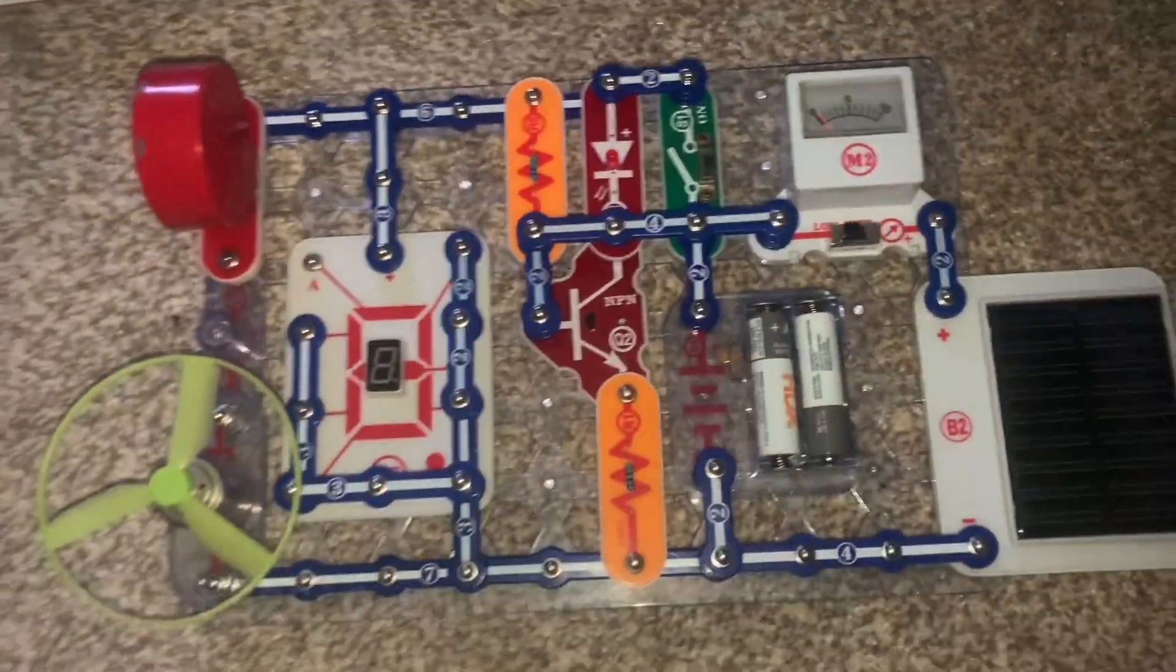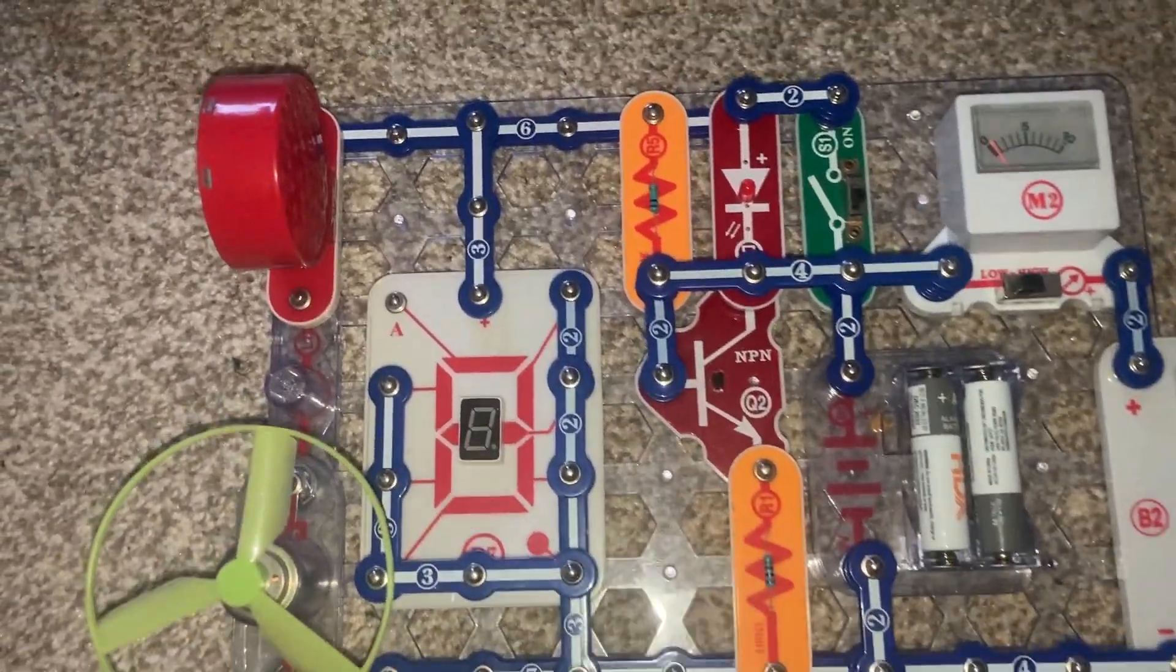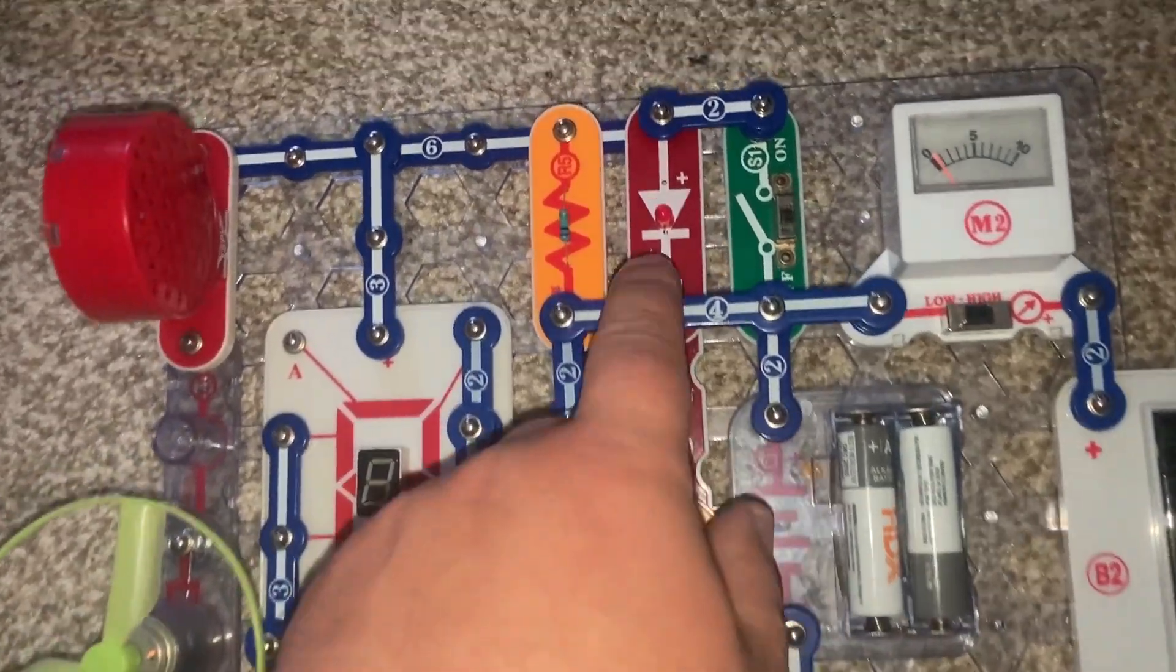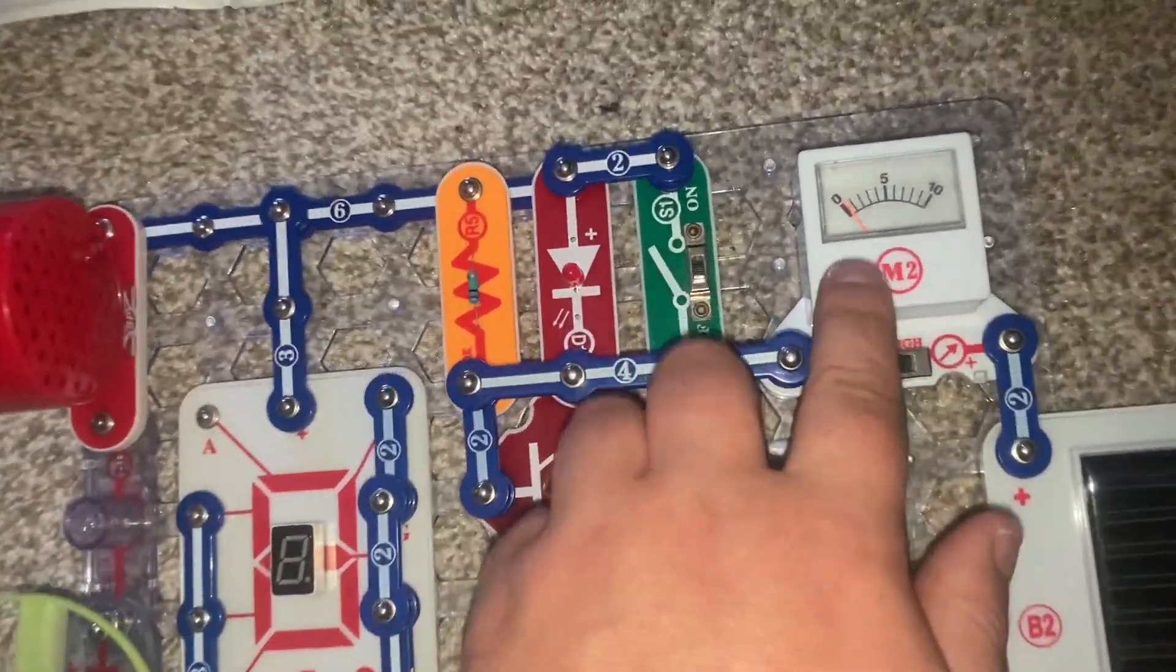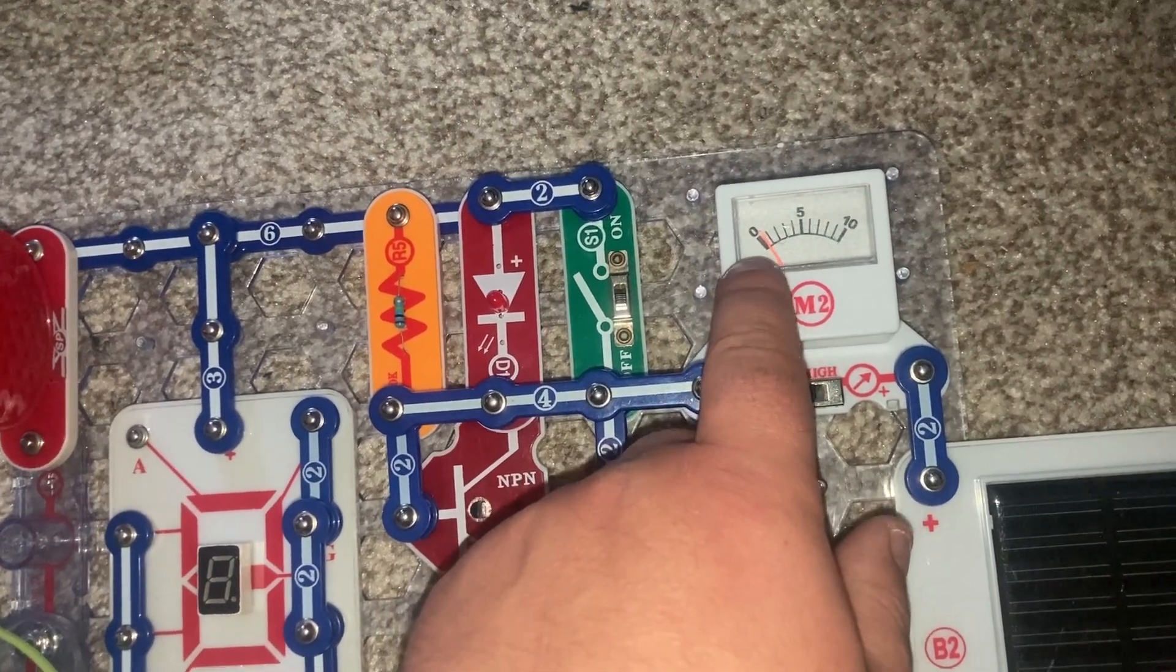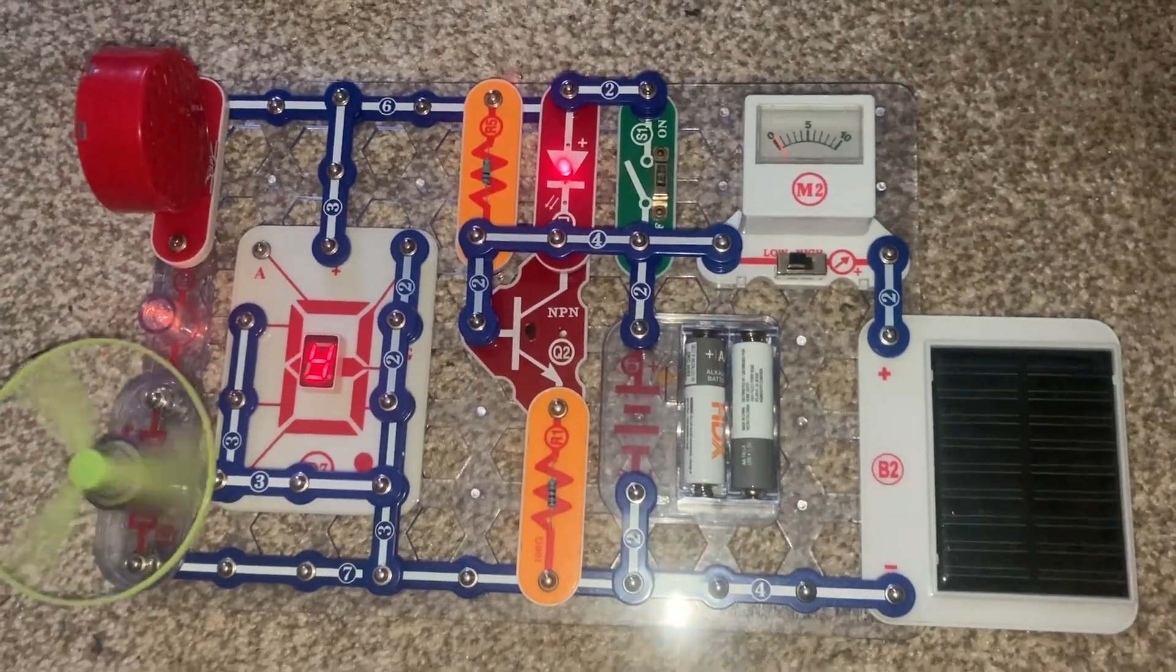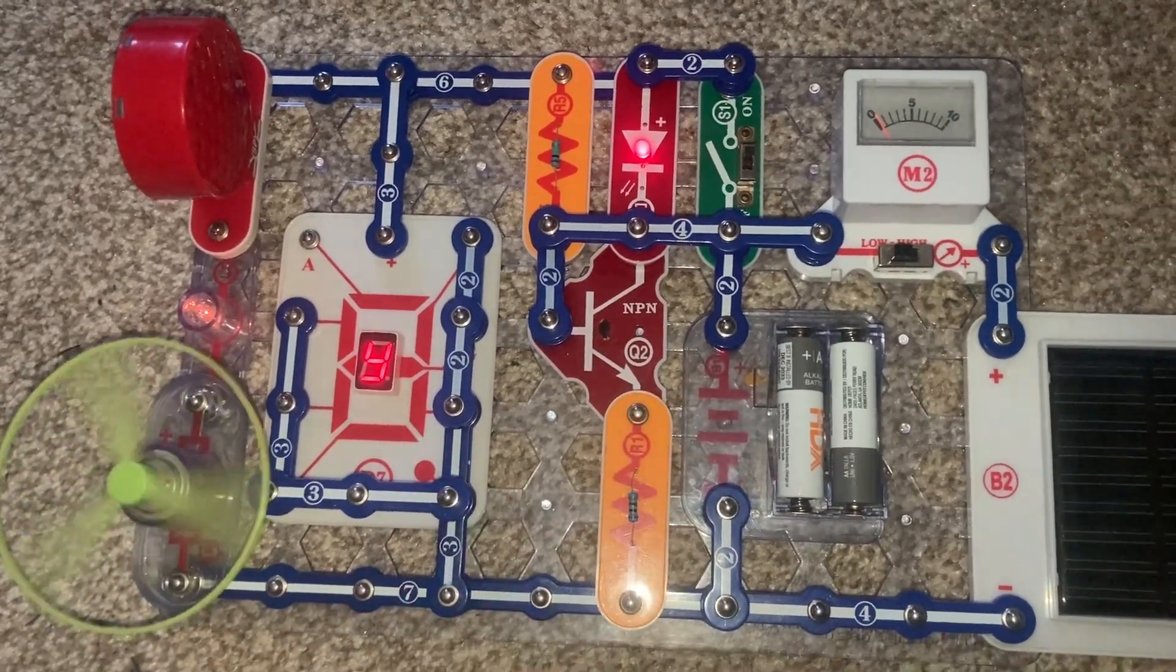This project is going to show you all six forms of output that are available in this kit. And those forms of output are the red LED, the speaker, the lamp, the motor, the seven segment display and the voltage meter. And its form of output comes from the pointer, which moves when there is current flowing through it. But I'm going to turn on the slide switch and you hear a buzzing sound from the speaker. The red LED lamp and seven segment display all light. The motor spins.